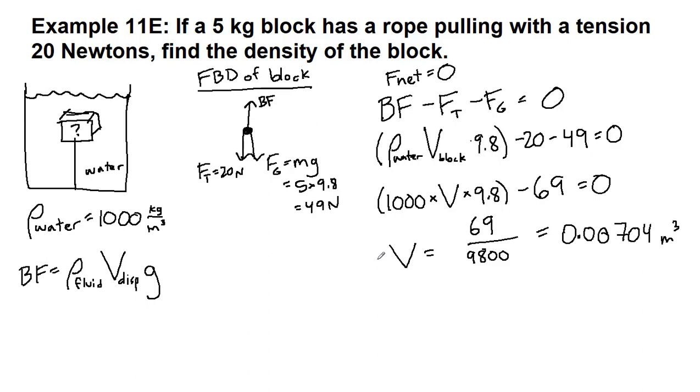And just like with every other example, although it's not usually the last step, the definition of density being mass over volume is used here. The density of this block, which is what we're trying to calculate, is equal to the mass of the block, which is 5 kilograms, divided by the volume of the block, which is 0.00704 meters cubed.